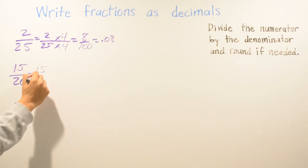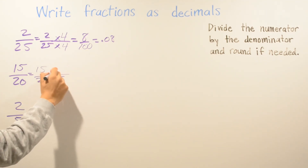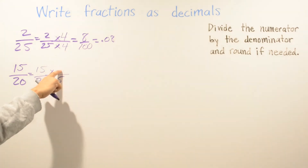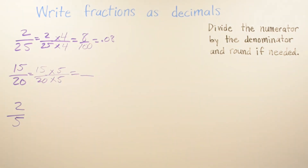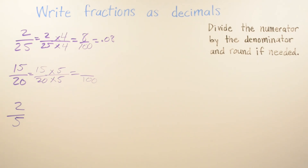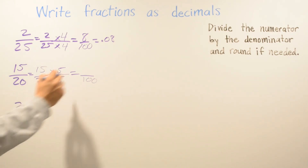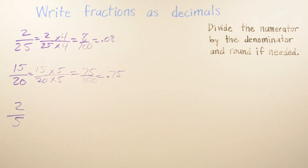For the second problem, fifteen over twenty, I'm using base one hundred. What can I multiply twenty by to get one hundred? That's five. Whatever I do on the bottom I also do on the top. Twenty times five gives one hundred, and fifteen times five gives seventy-five, so the decimal is 0.75.